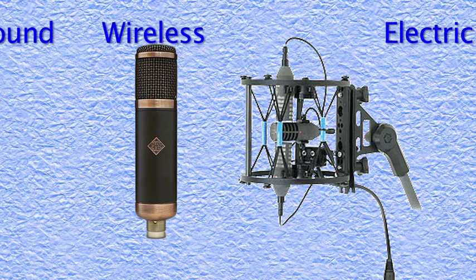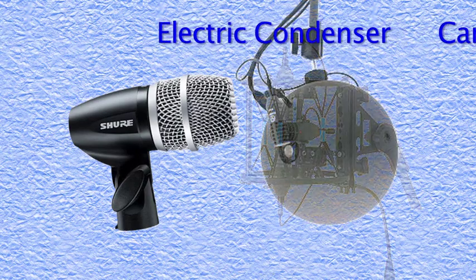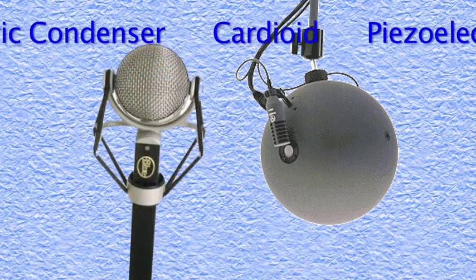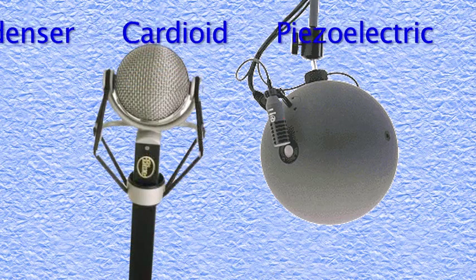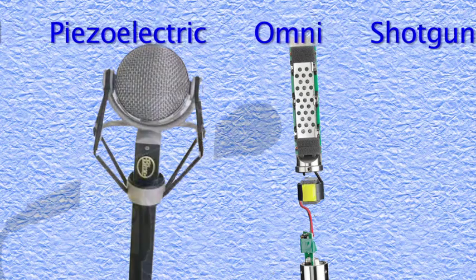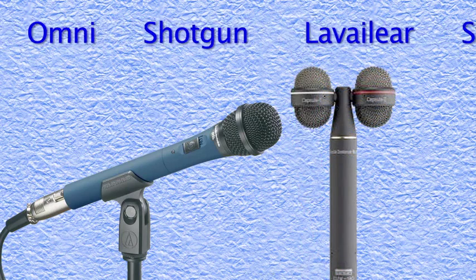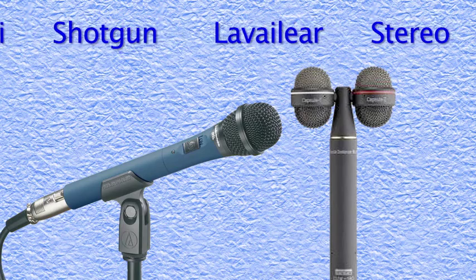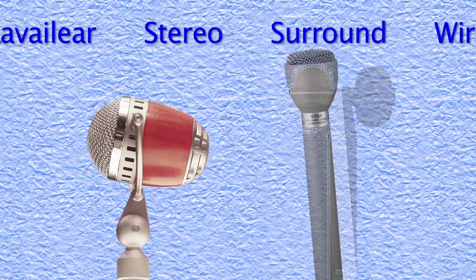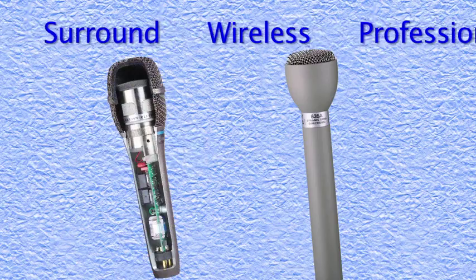All microphones, or transducers as they are also called, work in basically the same way. Sound pressure waves strike or move the mic's diaphragm or membrane, causing it to move in unison with the sound waves. This motion within the microphone is converted into an electrical signal that varies with the sound. This conversion from mechanical to electrical, and how it is accomplished, takes on many different forms and is the subject of this tutorial.